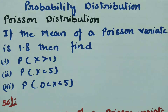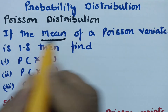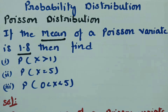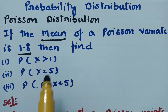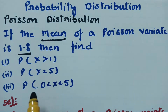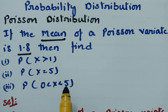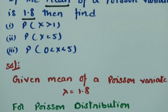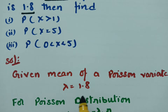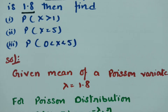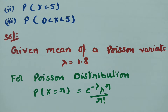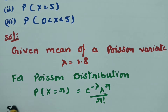This video is on Poisson distribution. We are going to solve a problem where the mean of a Poisson variate is 1.8. We have to find: the probability of x greater than 1, the probability of x equal to 5, and the probability of 0 less than x less than 5. The mean of the Poisson variate lambda is equal to 1.8. The Poisson distribution formula is: P(x = r) = e^(−λ) × λ^r / r!